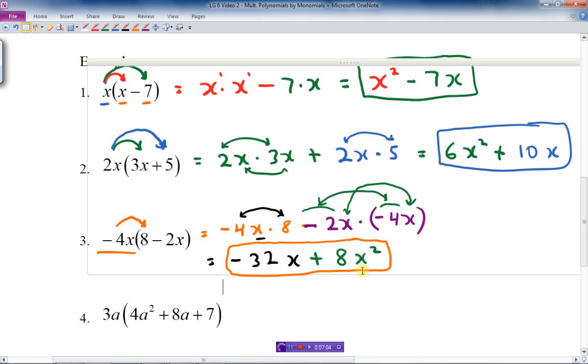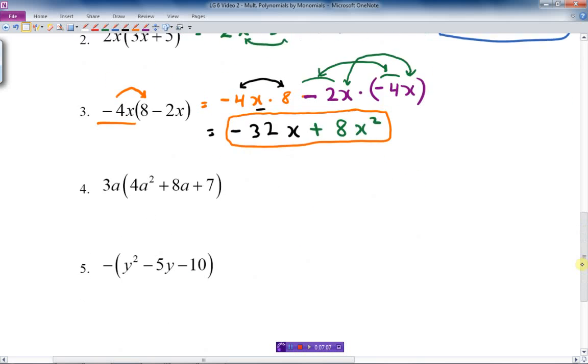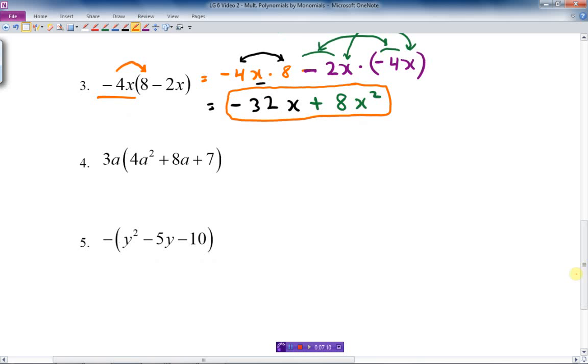Here we have one where the polynomial in the bracket has three terms. That's okay. That means you multiply three times. The first thing we're going to do is 3a times 4a squared. Then we're going to do plus 3a times 8a. And lastly, we're going to do 3a times 7.